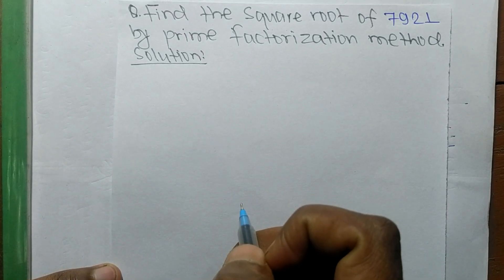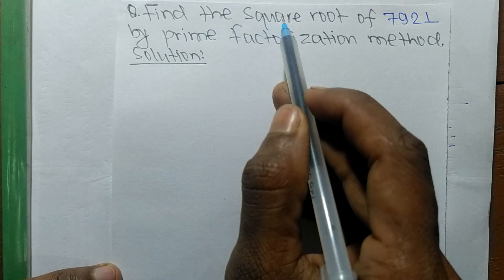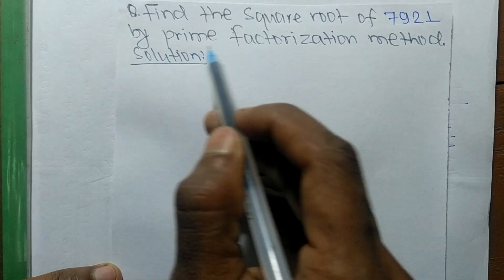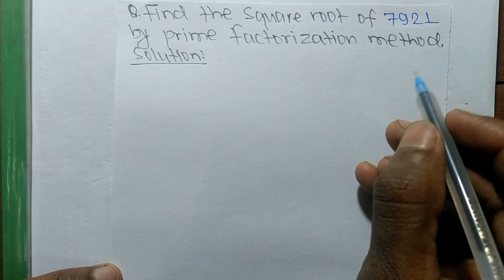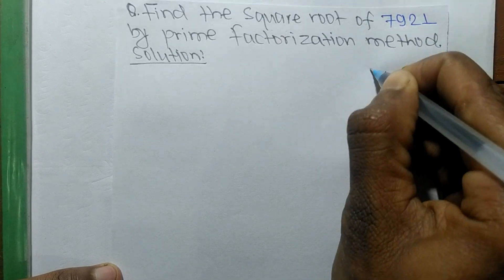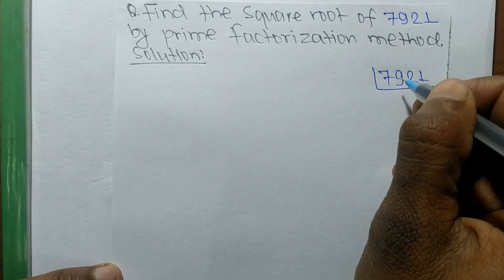Today in this video we shall learn to find the square root of 7921 by prime factorization method. First of all, we shall find out the prime factors of 7921.